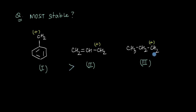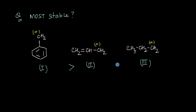For this cation, the empty orbital is connected to a single bond — there aren't any double bonds here so resonance can't happen, making this the least stable of the three. So one is going to be more stable than two, and two is going to be more stable than three.